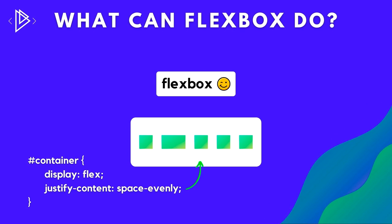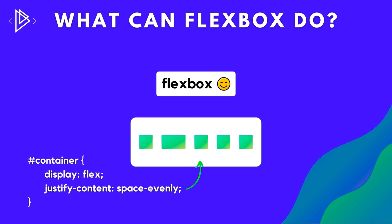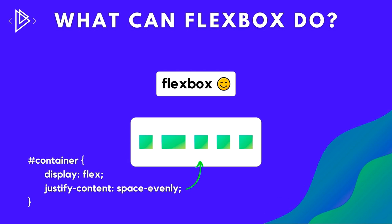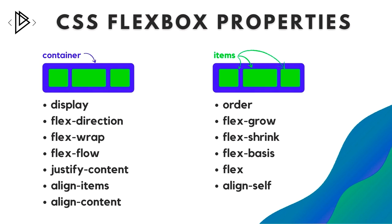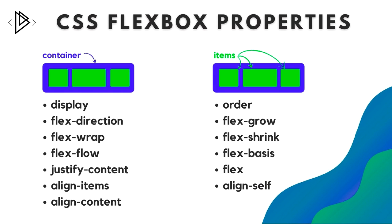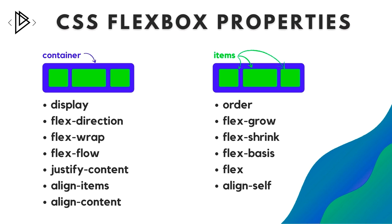Whenever we want to control items laid out in a row or a column, and control the space between them and how they use up space when the container grows or shrinks — those are the uses Flexbox was designed for. Flexbox has container properties applied to the container — like display and justify-content — and item properties applied to the items within the container. Container properties include: display, flex-direction, flex-wrap, flex-flow, justify-content, align-items, and align-content. Item properties include: order, flex-grow, flex-shrink, flex-basis, flex, and align-self.